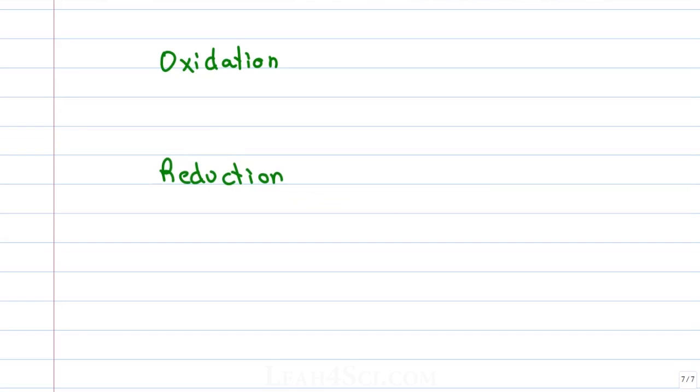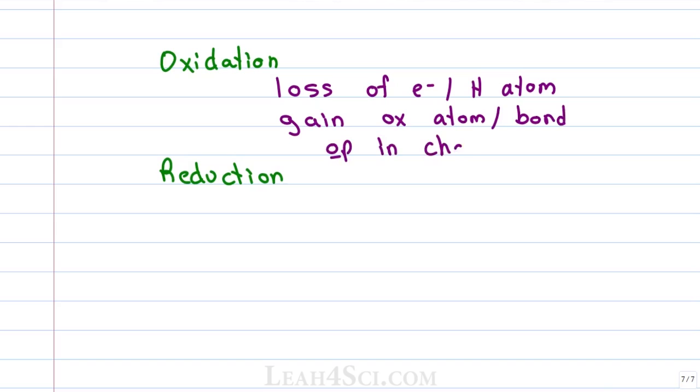In the last video, we looked at the definitions for oxidation as the loss of an electron or a hydrogen atom which is a proton coming along with that electron. The gain of an oxygen atom or an additional bond to oxygen so if you have an oxygen with a single bond and you create a double bond, or going up in charge meaning the oxidation number of that atom increases or goes up spelled with an O to remind you that it's oxidation.